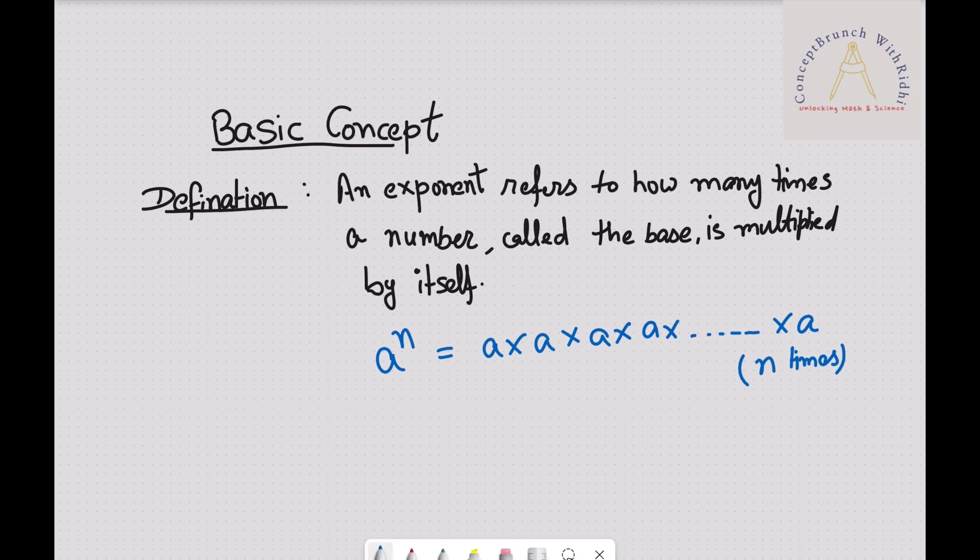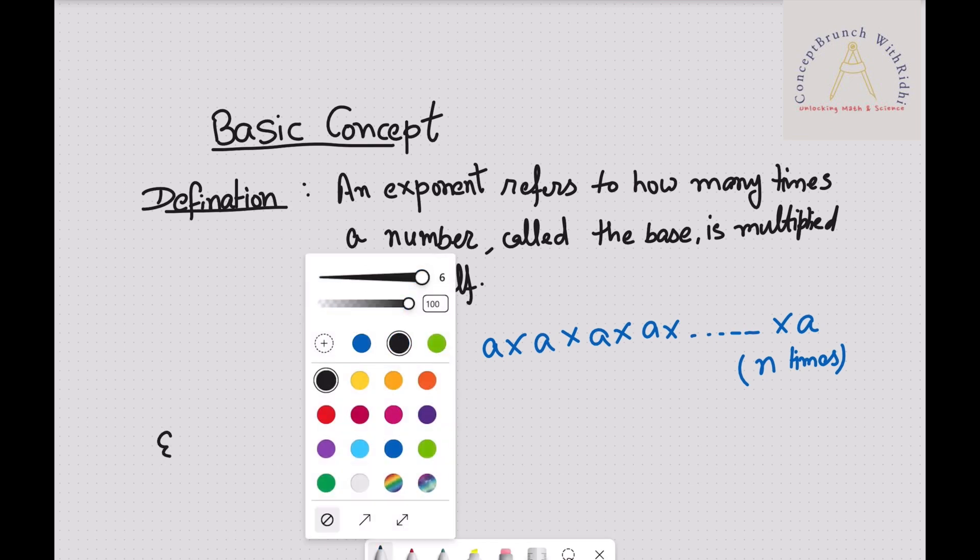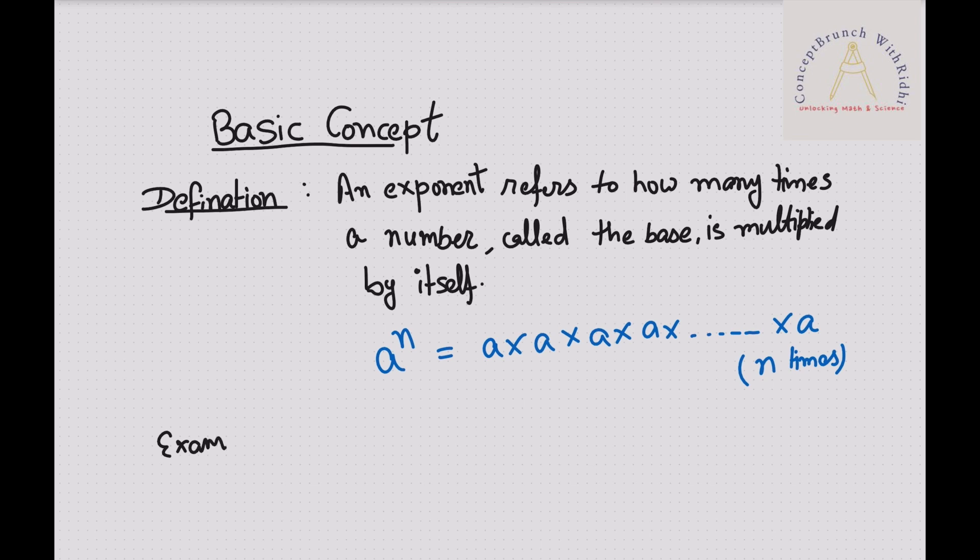Let's take an example. For example, suppose 3 to the power of 4. So we can write 3 times 3 times 3 times 3, and we can write as 81. Over here we can say that this 3 is your base, and the 4 we can say as exponent, or we can say indices as well.